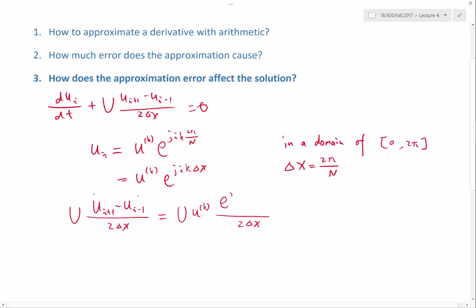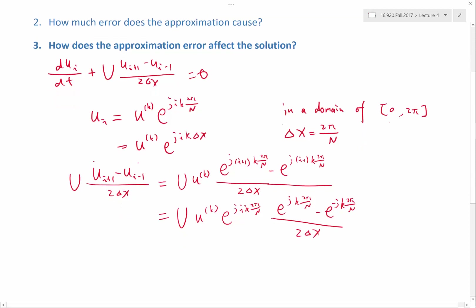And that something is e to the j (i+1) k 2π over n, minus e to the j (i-1) k 2π over n. Right. So pull out the common term, which is e to the j i k 2π over n. What we get left is e to the j k 2π over n, minus e to the -j k 2π over n, divided by 2 delta x.